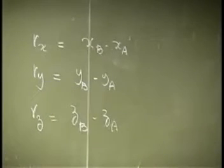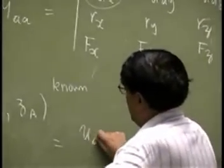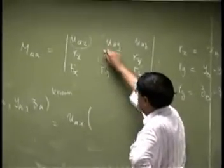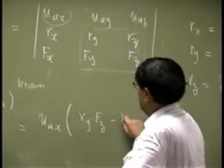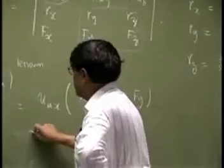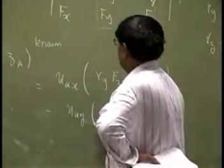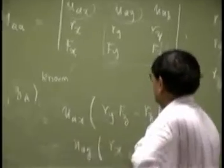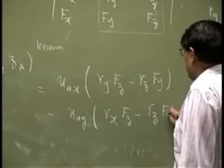Then your actual value of the determinant, you have UAX and then your left over is the determinant here. So that will be RYFZ minus RZFY. Then you have to take negative, you use this, so you will have RXFZ minus RZFX.